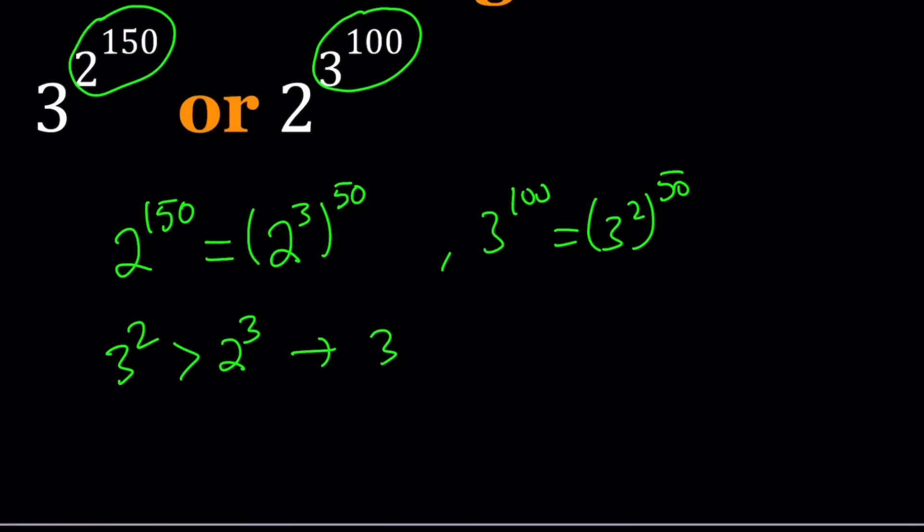And then let's go ahead and raise both sides to the 50th power. And then the inequality will be preserved because you have positive numbers and you're raising them to a higher power. However, the larger side stays larger. And then this indicates 3 to the power 100 is greater than 2 to the power 150.